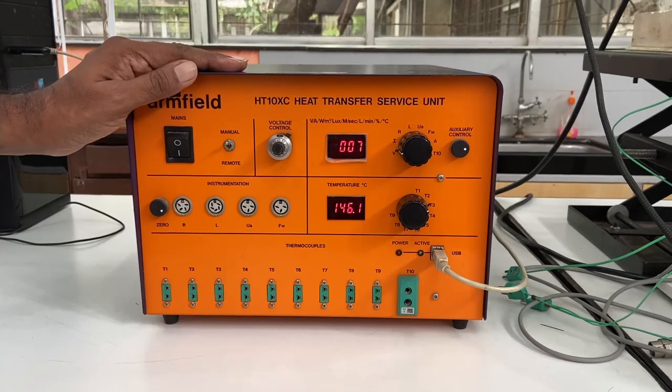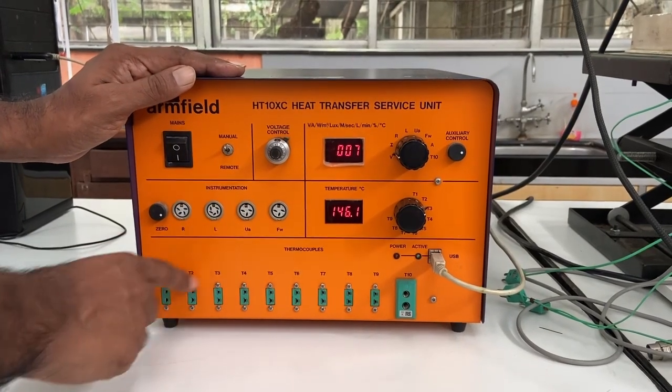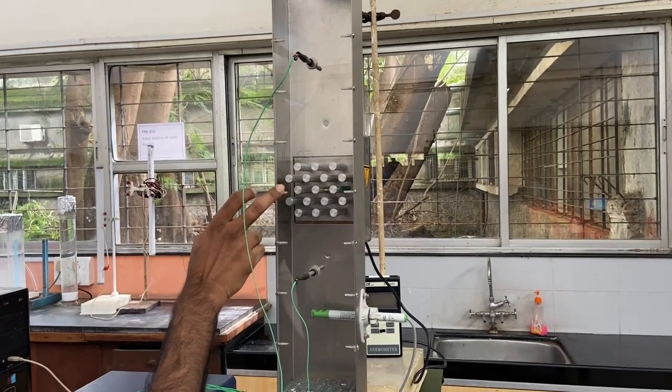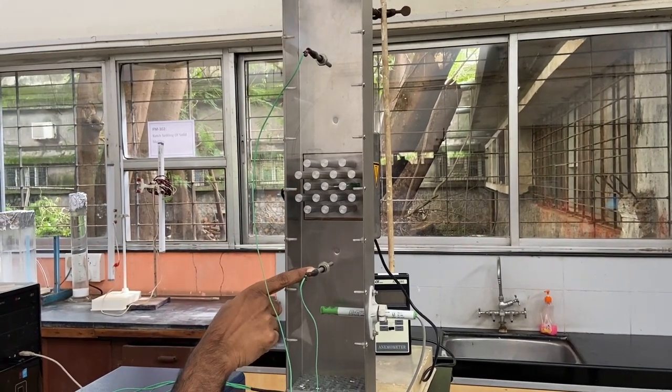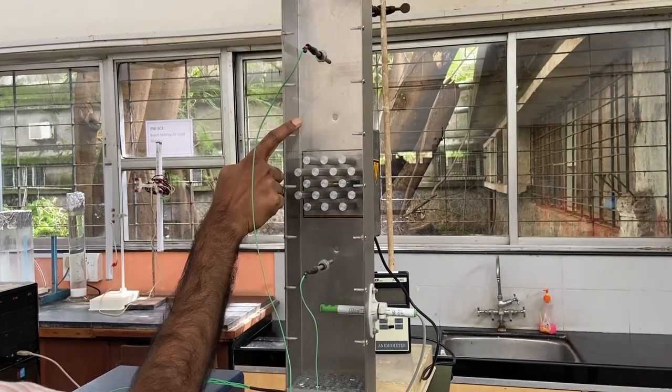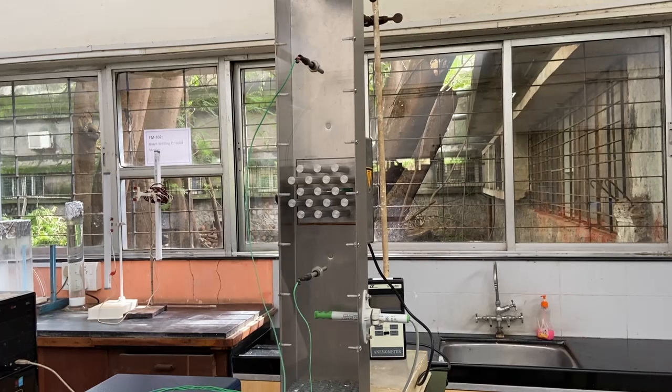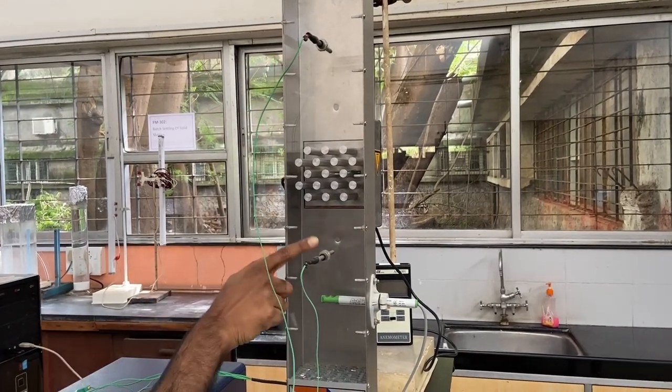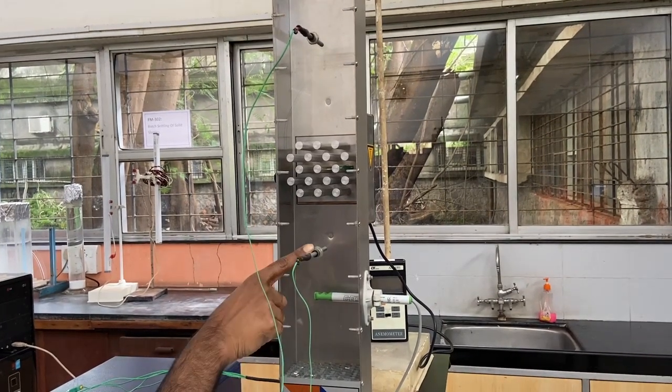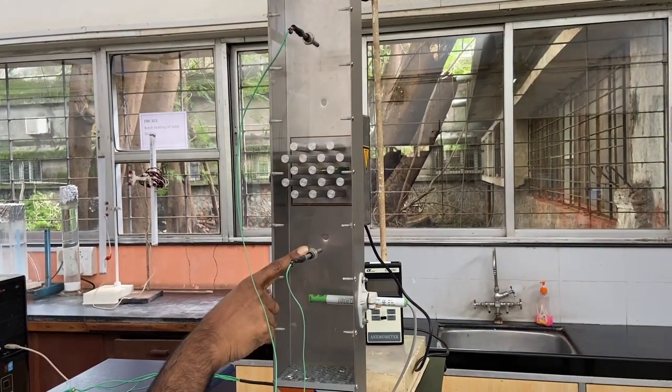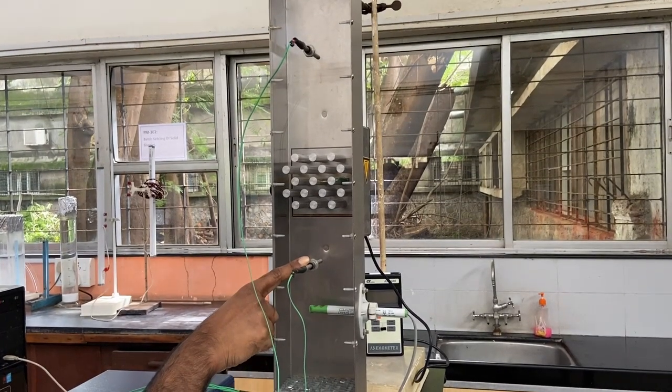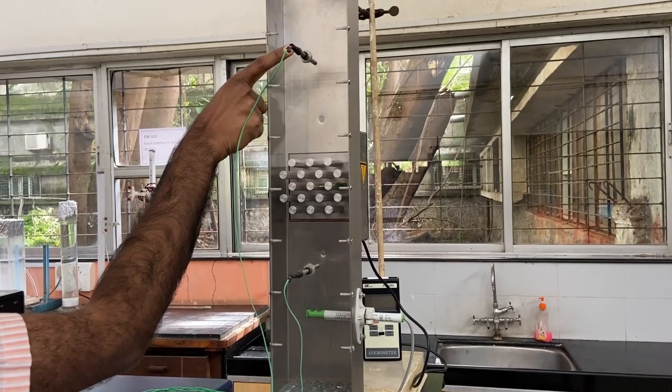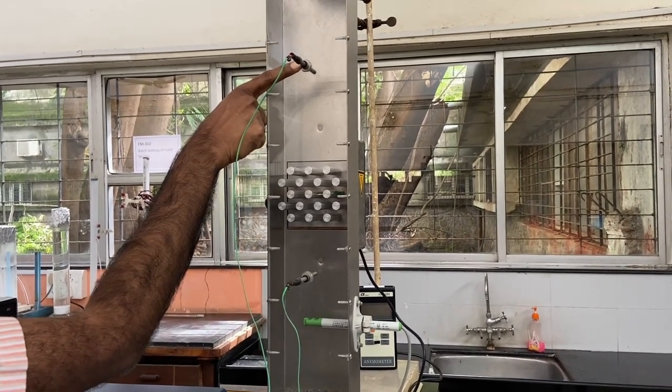Now we will see what are the various quantities that are either set or measured. It is the fluid that is taking the heat away so we would like to know what temperature it was before it came in contact with the heater and what is the temperature after contact. We have here two thermocouples measuring exactly the same. This thermocouple measures the temperature of the incoming air. This is denoted as T1 and this one above measures the outgoing air temperature. This is denoted as T2.